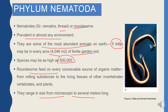Nematodes are male or female — they have separate sexes. If you look at the feces of your baby or child you may find them. These are the nematodes found everywhere.